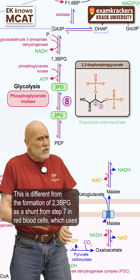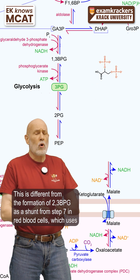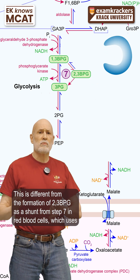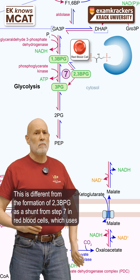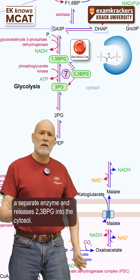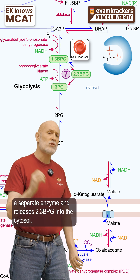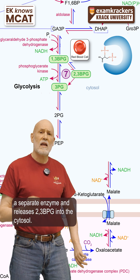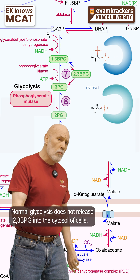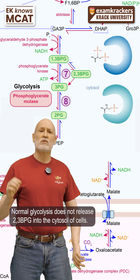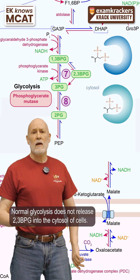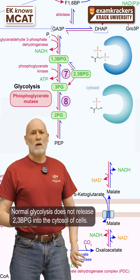This is different from the formation of 2,3-BPG as a shunt from step seven in red blood cells, which uses a separate enzyme and releases 2,3-BPG into the cytosol. Normal glycolysis does not release 2,3-BPG into the cytosol of cells.